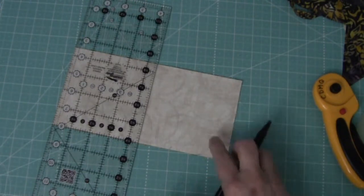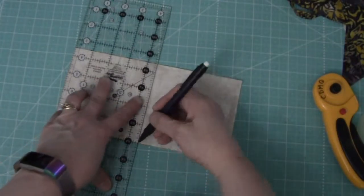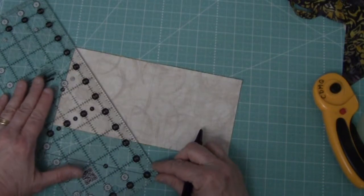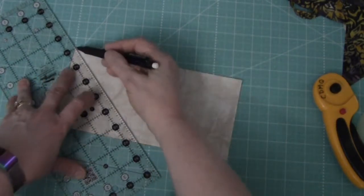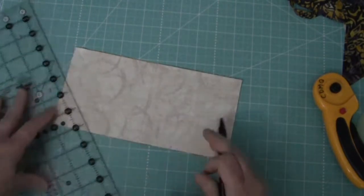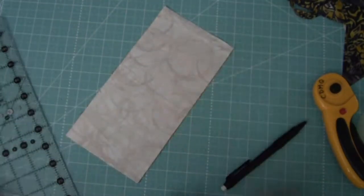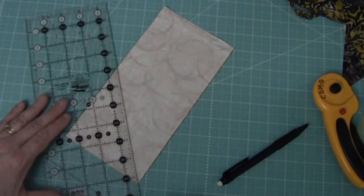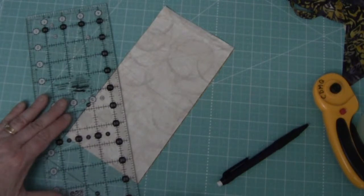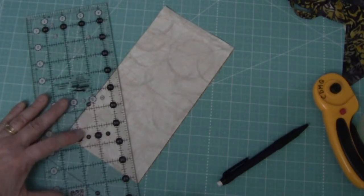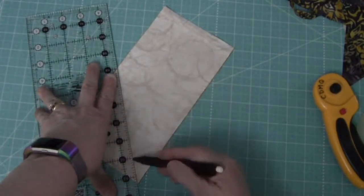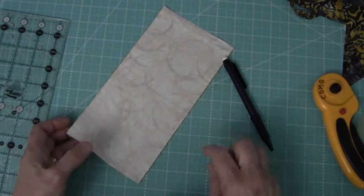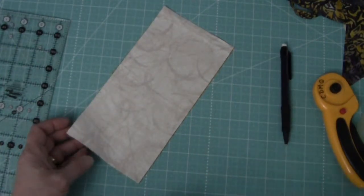The first thing we're going to do is make some half square triangles, so I need to draw some lines. This is all explained in the instructions for block 3 which is from February. Then I'm going to take this over to my sewing machine and stitch, separate and press.